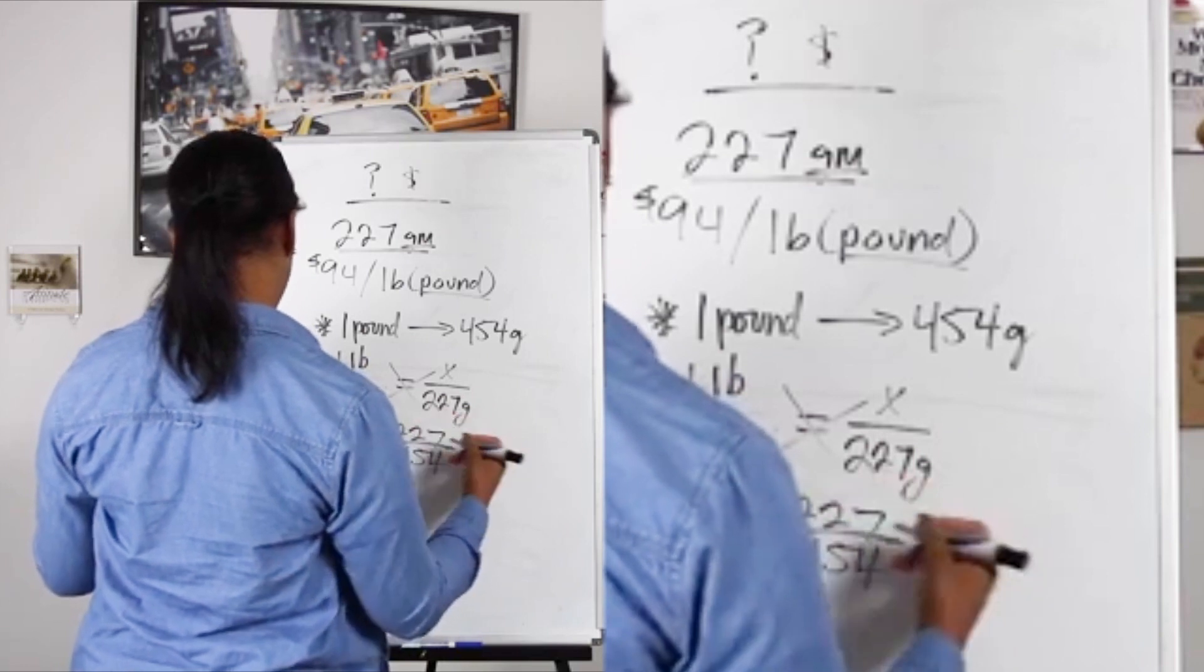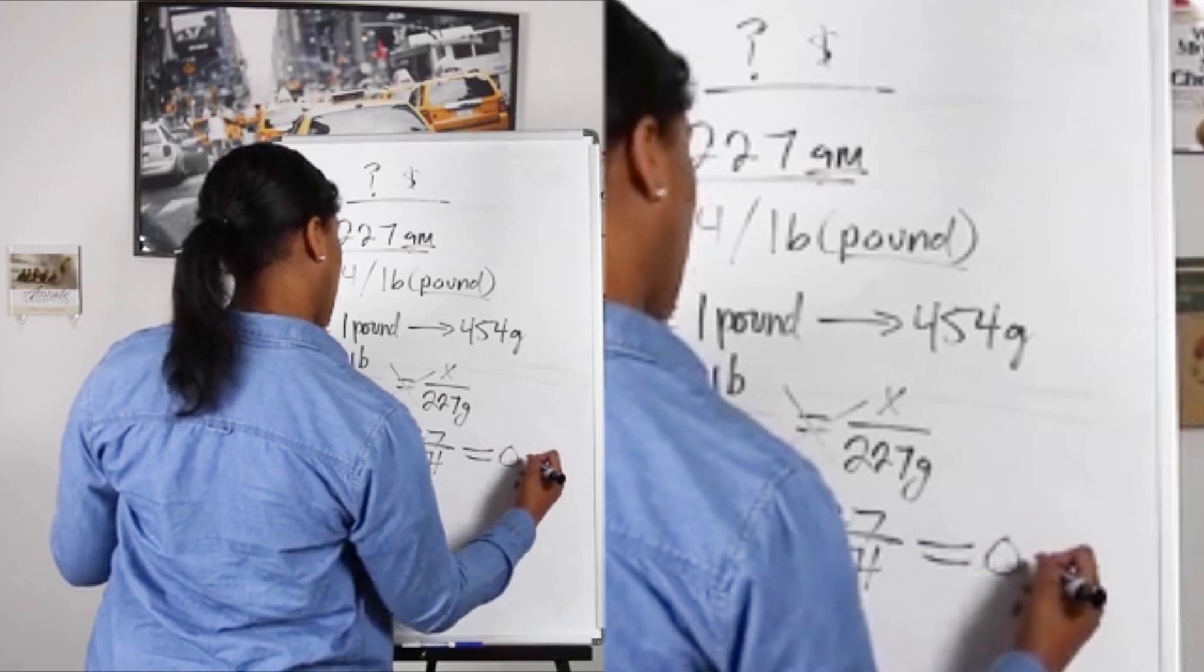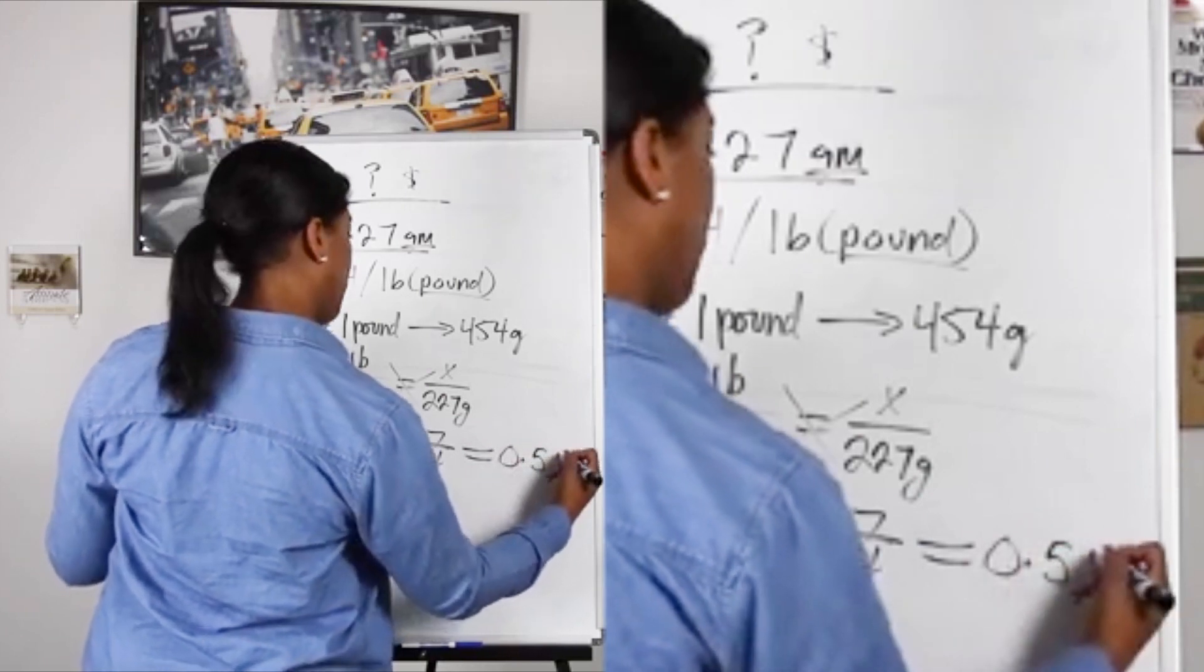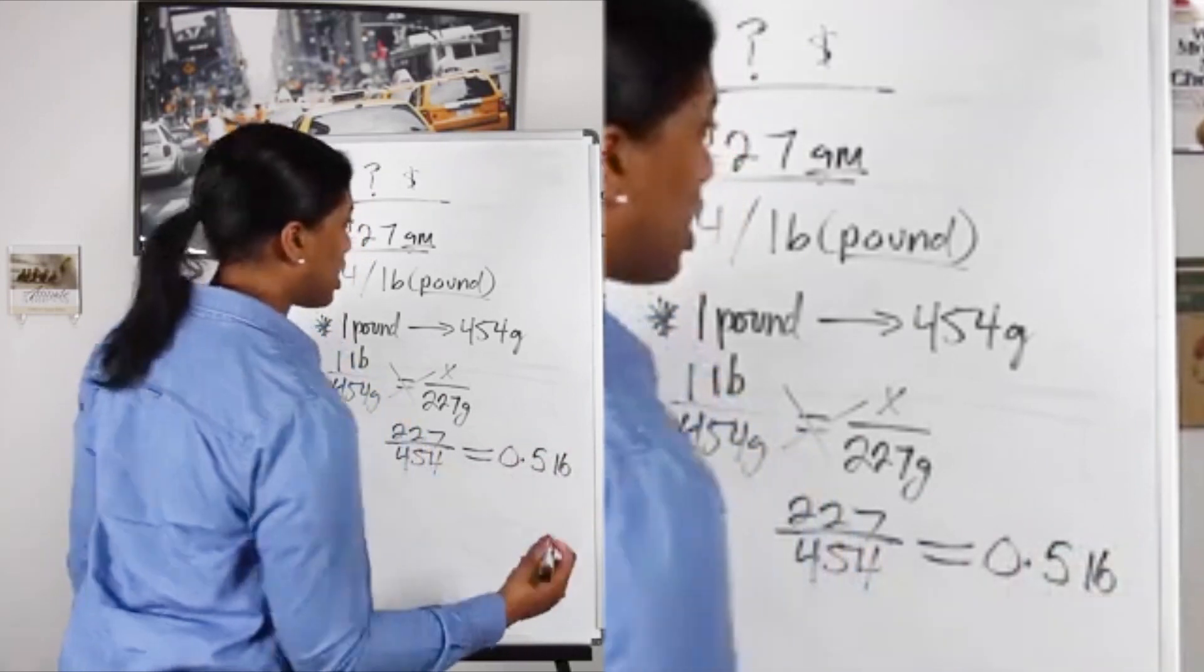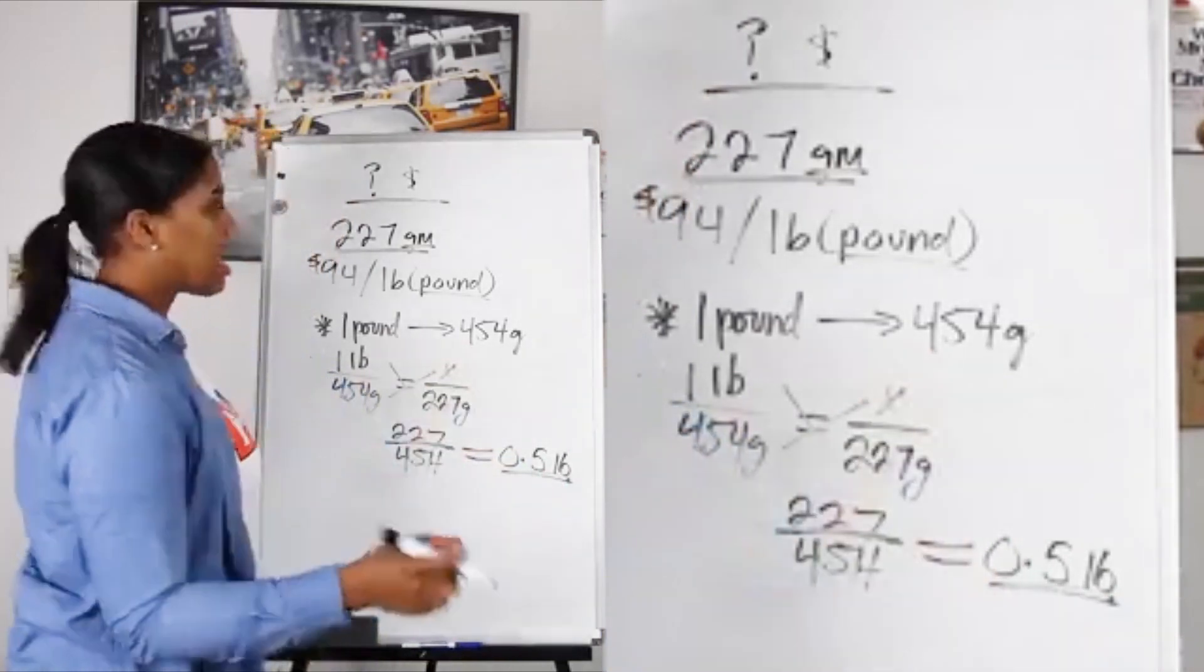The answer that you should get is 0.5 pounds. You're going to get half of a pound - it's not even a full pound. But that's not where it stops.